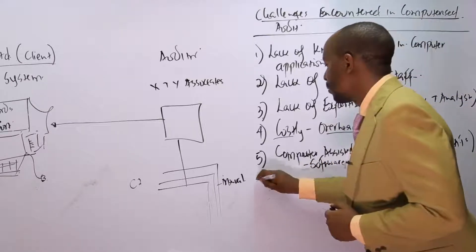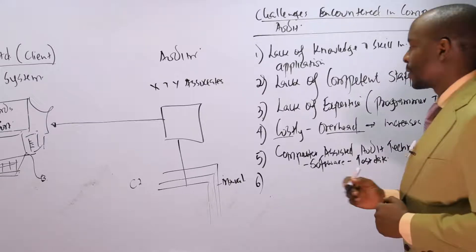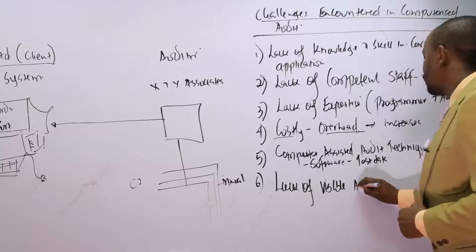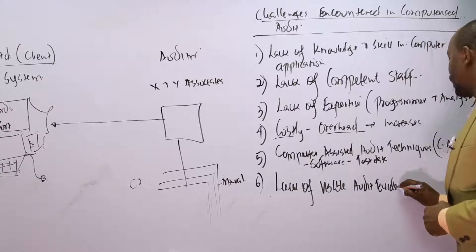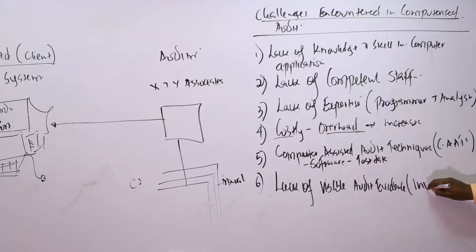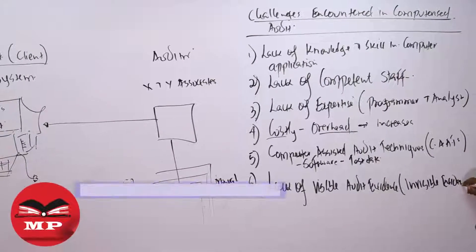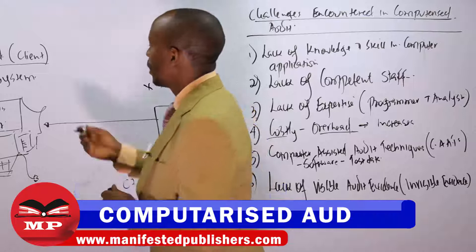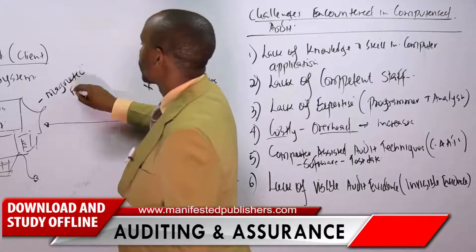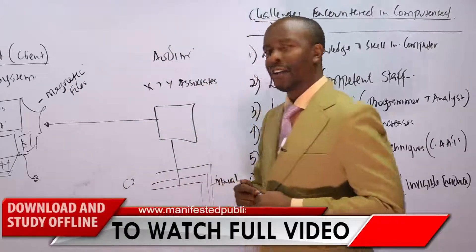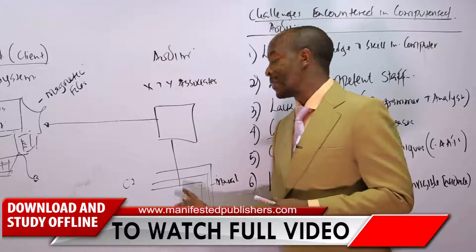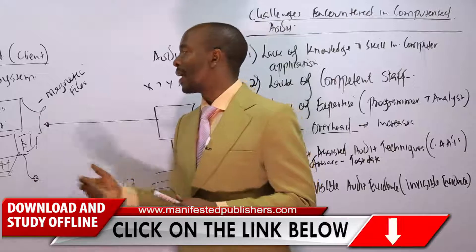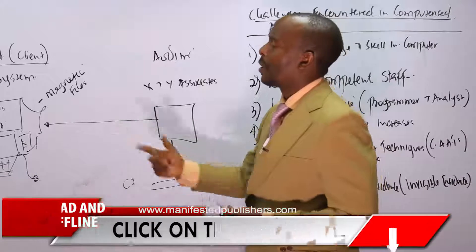Another challenge is lack of visible audit evidence. In a computerized accounting system, data is maintained in the form of magnetic files. There is no way to go to a hard disk and read the contents like you would go to a cabinet and read manual files. The files here are maintained using secondary storage like hard disks, USB drives, or CPUs, and this presents a major problem for the auditor.